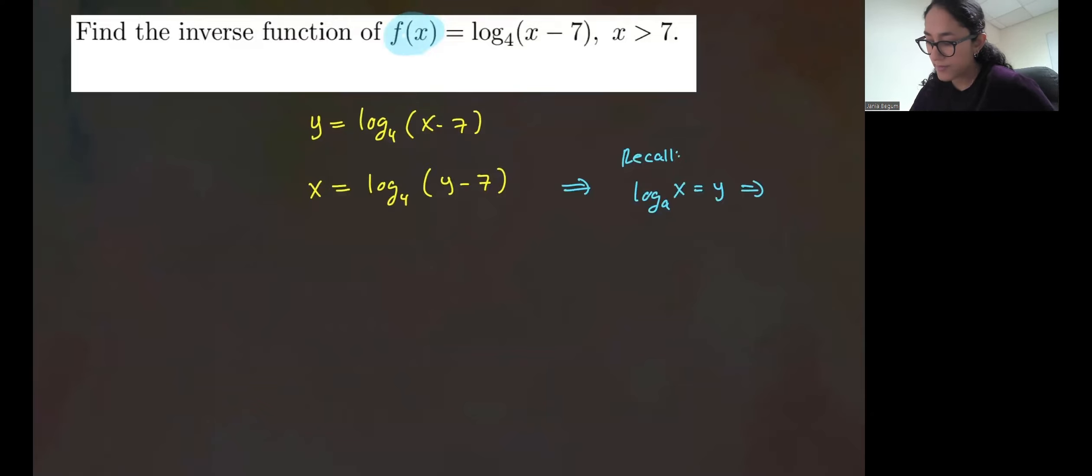So for our equation right here, our a is 4, our x is kind of like this piece and y is this piece right here.